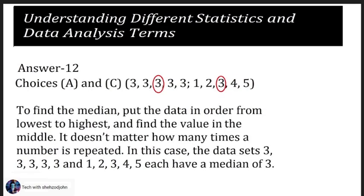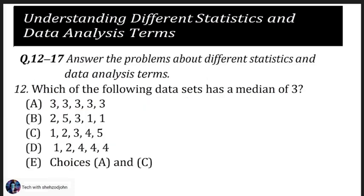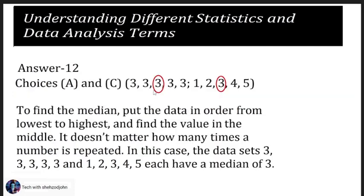Choice E: A and C. The answer to question 12 is choice A and C. It means there are two data sets: three, three, three, three, three and one, two, three, four, five. Going back to choice A: three, three, three, three — and choice C: one, two, three, four. The median is the middle value of the data.